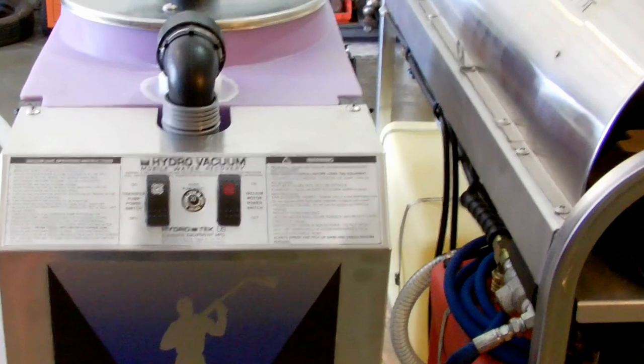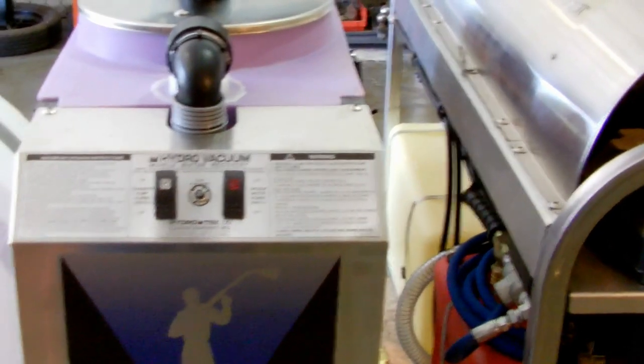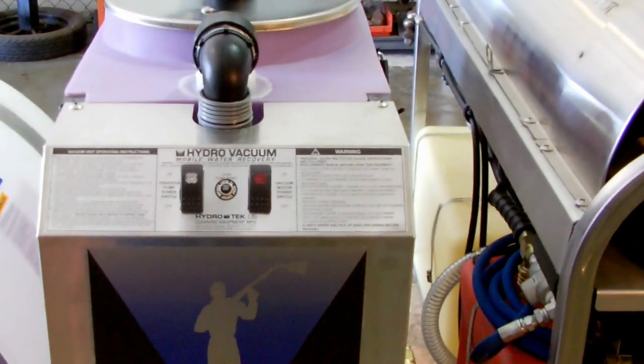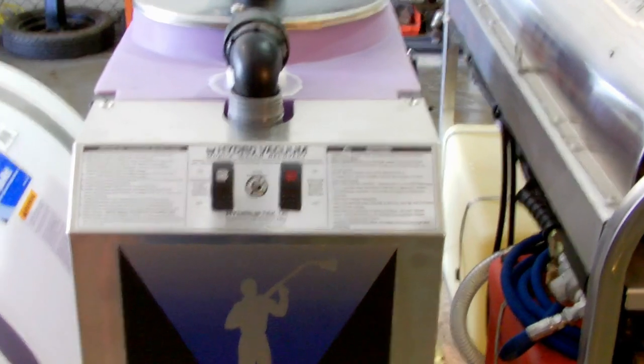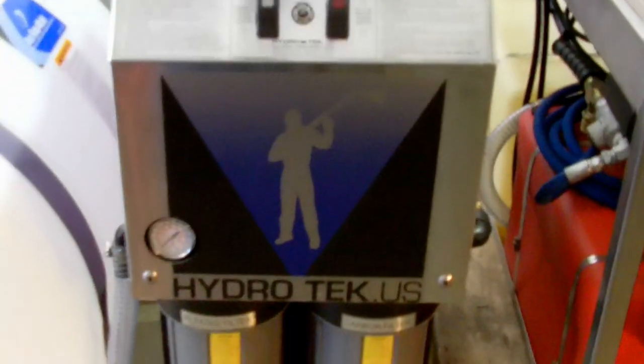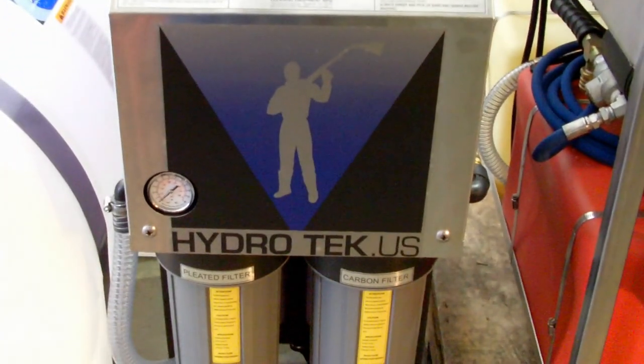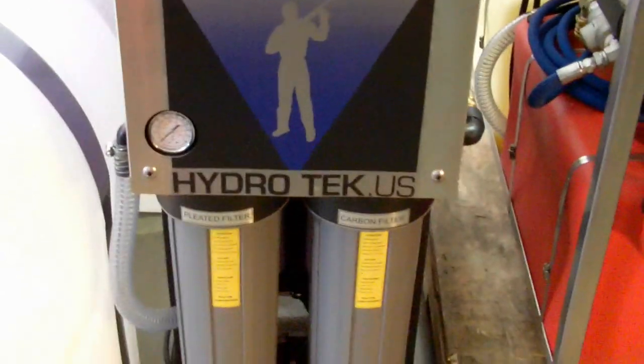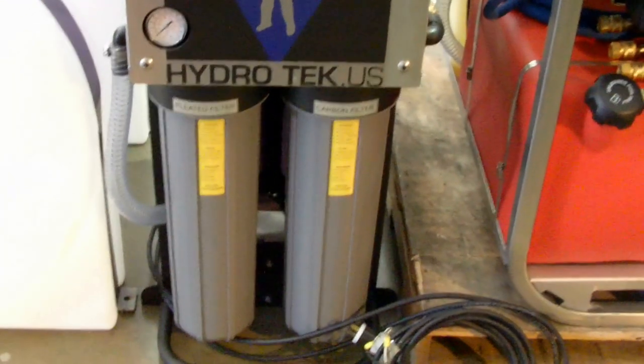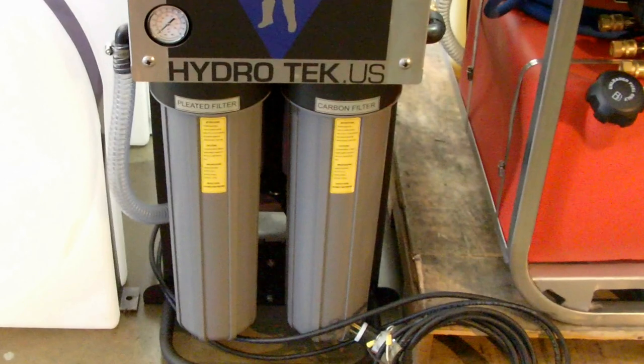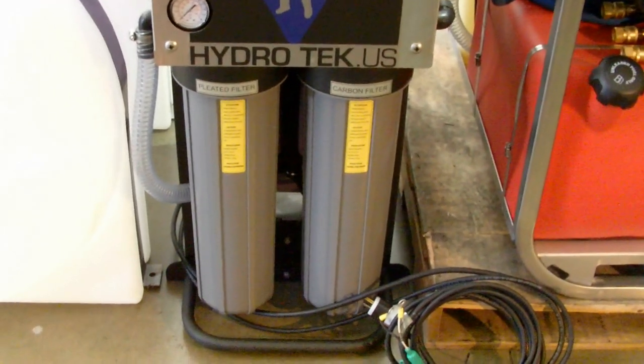You've got two control switches. One on the left is for the transfer pump. The one on the right is for your vacuum switch to activate the vacuum. You have a vacuum pressure gauge to monitor the filters. And then you've got a pleated filter on the left and then a carbon filter on the right.